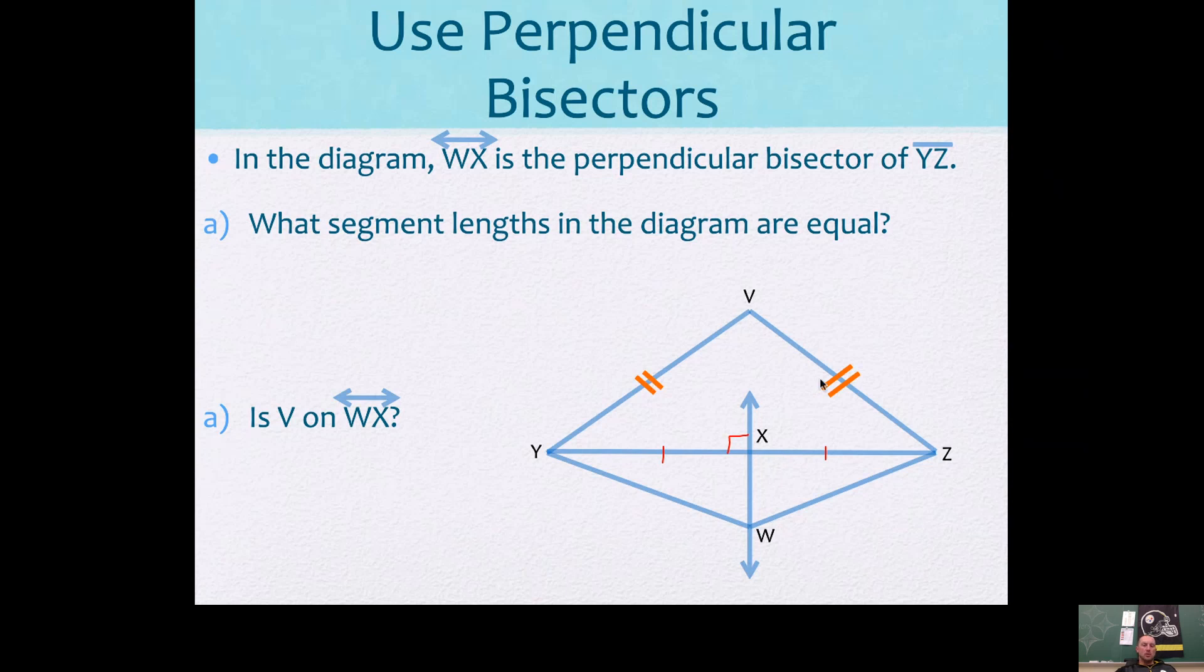Well, these ones are marked equal. So we'll say segment YV is congruent to segment ZV. Also, segment YX is congruent to segment ZX.